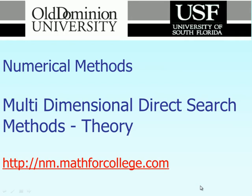At that time, I mentioned that we can use either the golden section search method or the Newton-Raphson method. The golden search method is a bracketing method where the user is required to provide the initial estimation for the lower bound and upper bound of the solution. Then, as iteration proceeds, you shrink that interval to a smaller value until it converges. That golden section search method is always guaranteed to converge, assuming you set up the proper initial lower bound and upper bound.